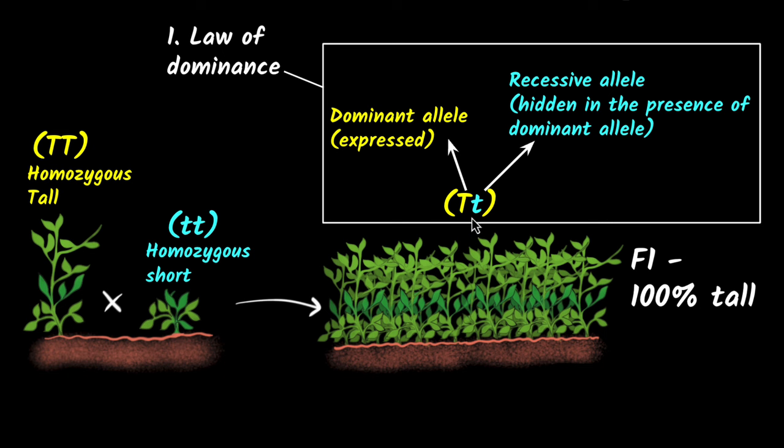Finally, what do we call this combination of alleles? It is not homozygous now, it is heterozygous because we have two different copies. But it is tall because the tall one is dominant.